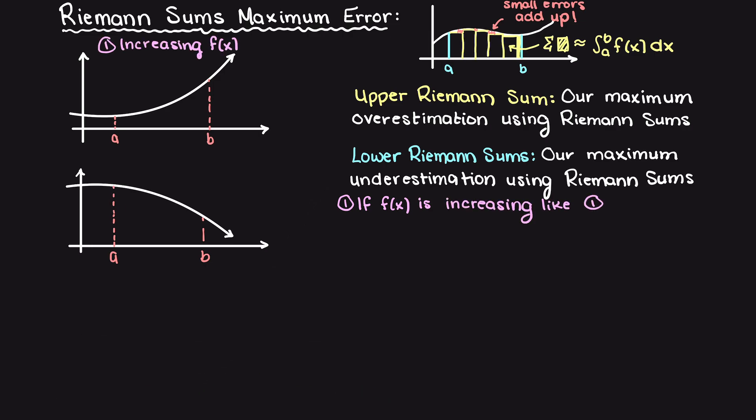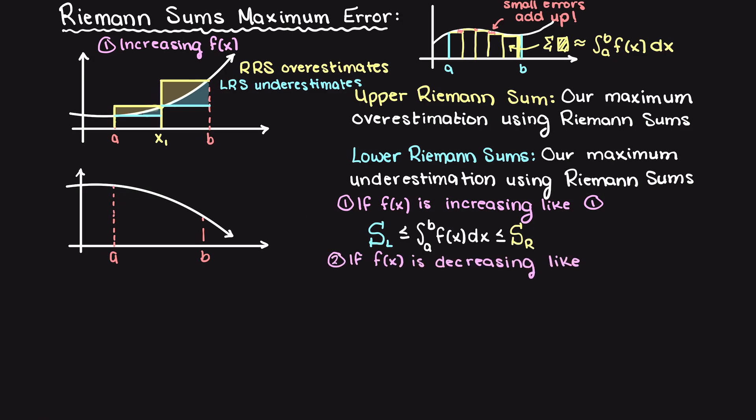We learned that if a function is increasing between two bounds, then the right Riemann sum will maximize the overestimation. And when our function is decreasing, the left Riemann sum will optimize the overestimation of our area.